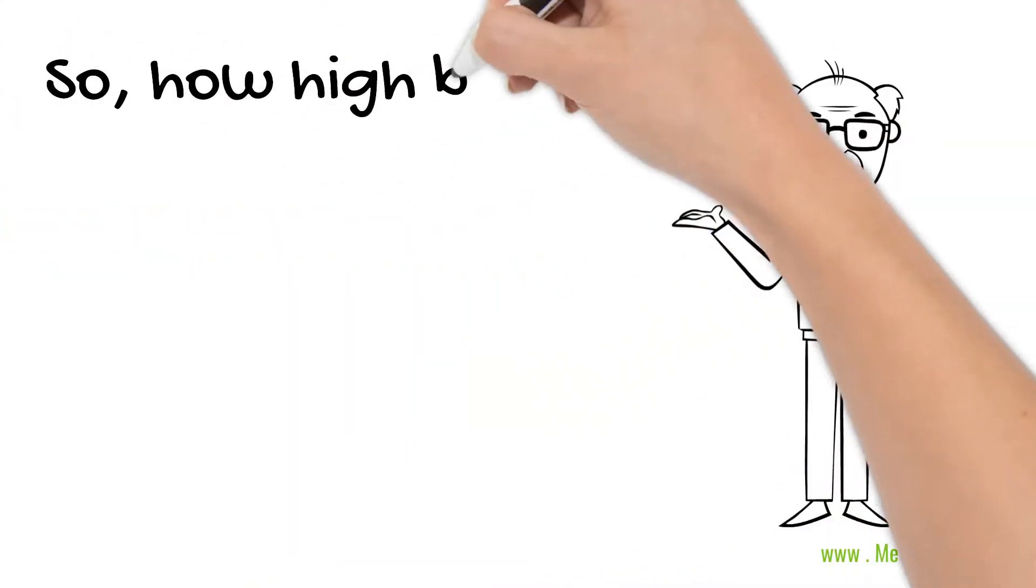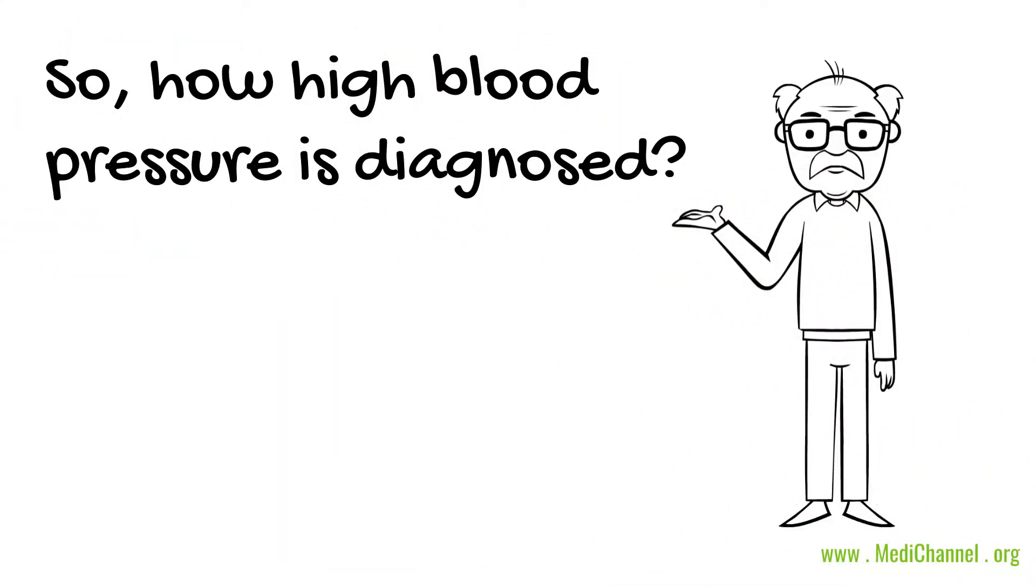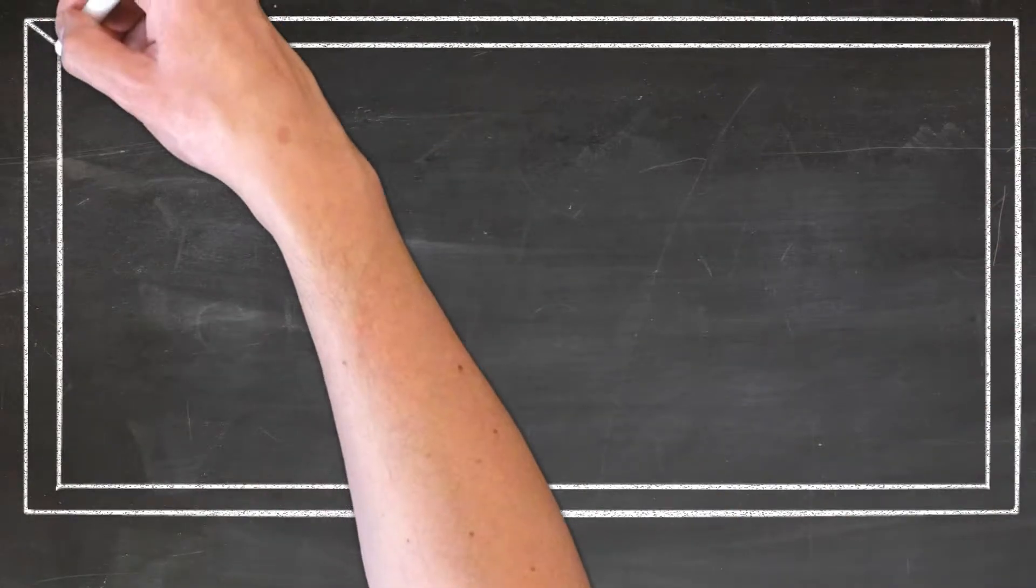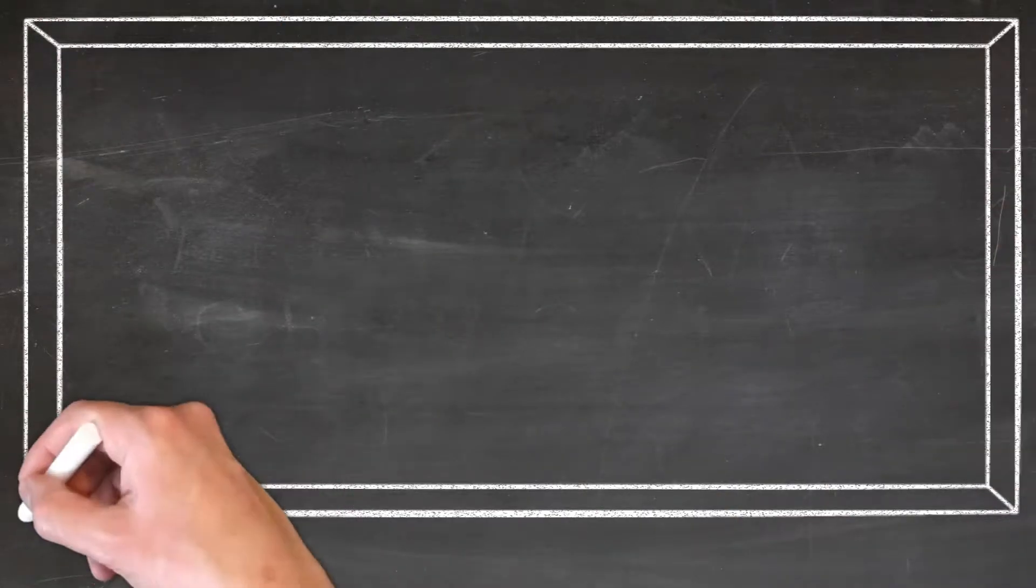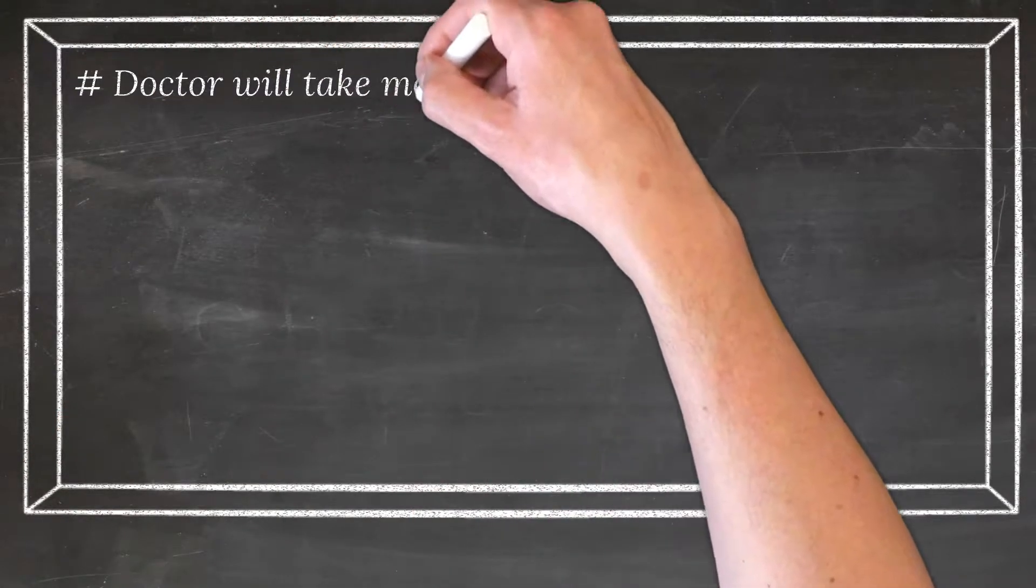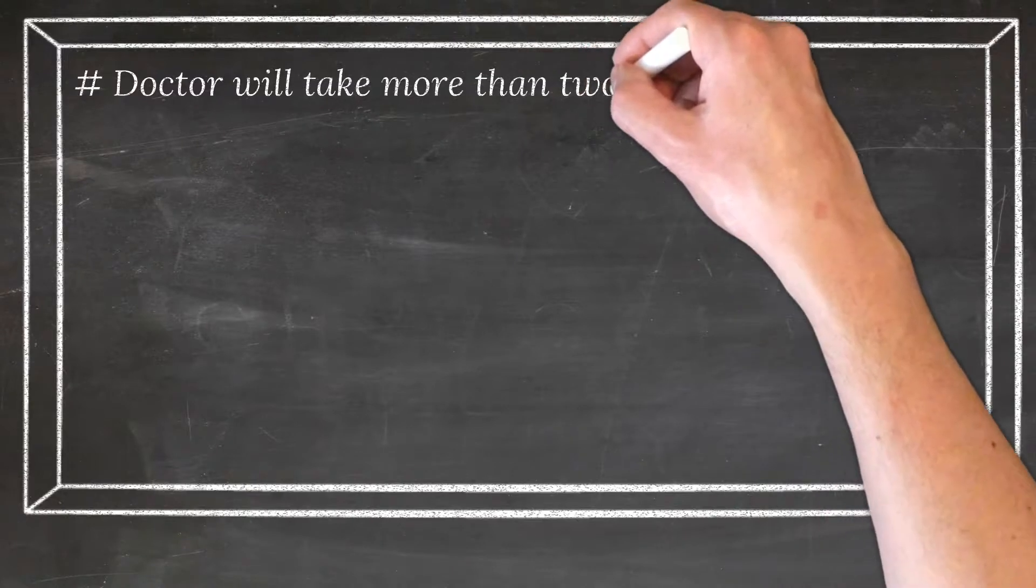How is high blood pressure diagnosed? When you go for a blood pressure check, your doctor will generally take more than two readings at different times or visits to ensure that the diagnosis is correct. In fact, the blood pressure may also be taken at different settings to avoid possible inclusion of white coat hypertension.